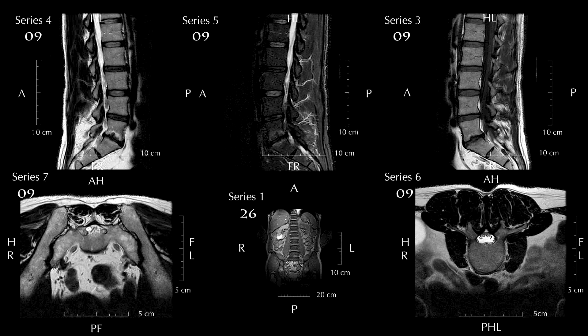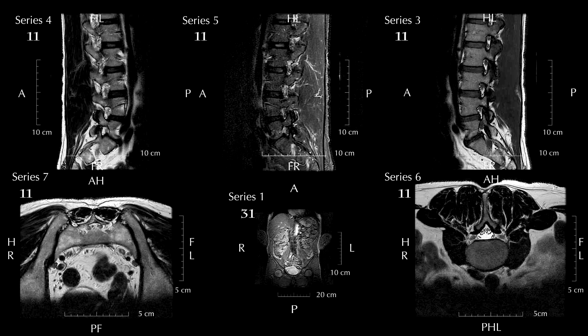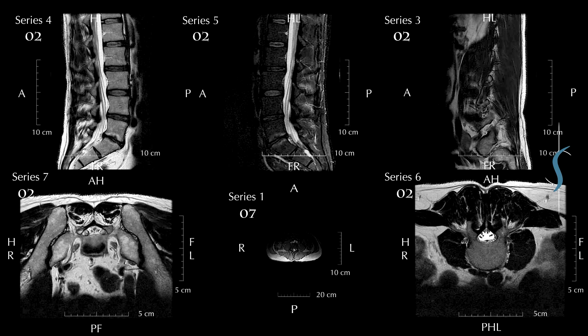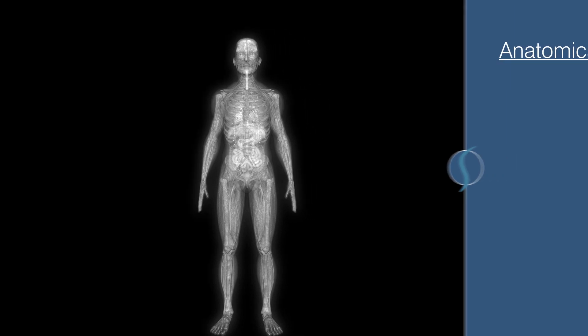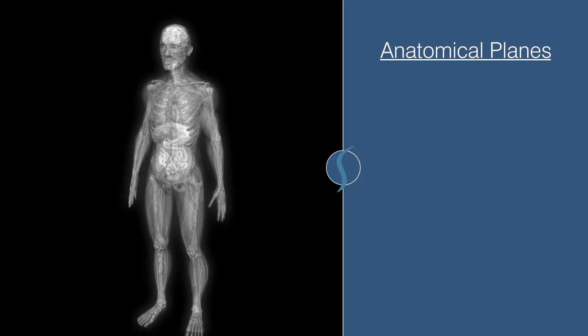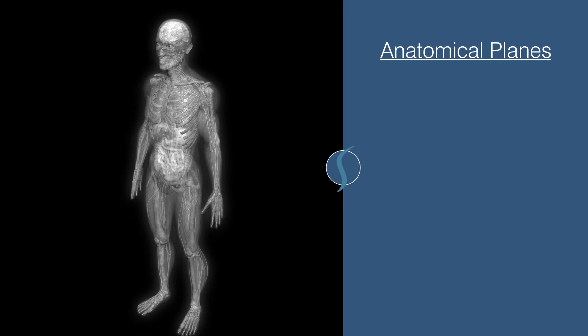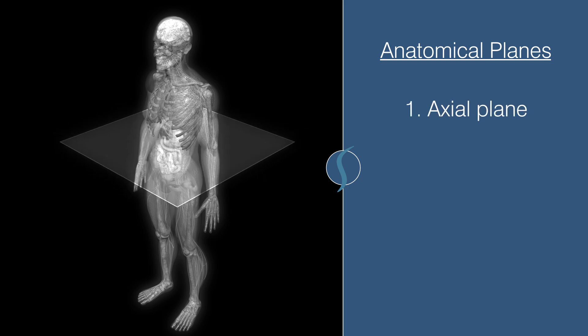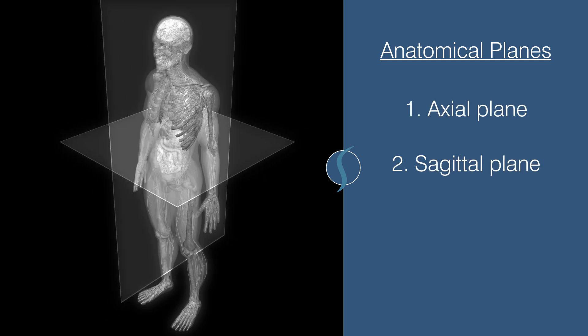MRI studies are excellent tools to view your body parts. Doctors look at MRIs in several different planes. The two main planes are: number one, the axial plane, and number two, the sagittal plane.